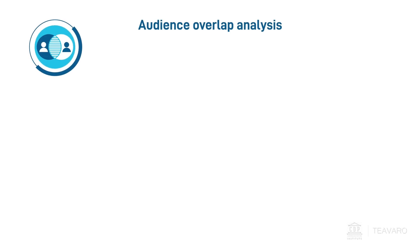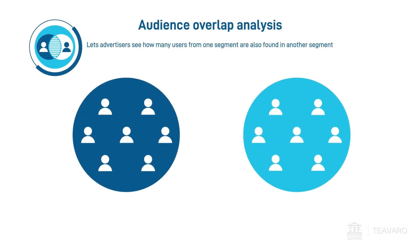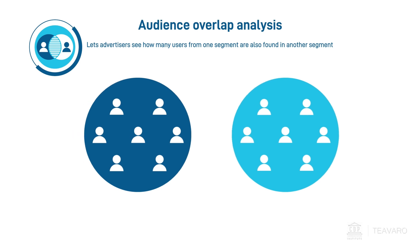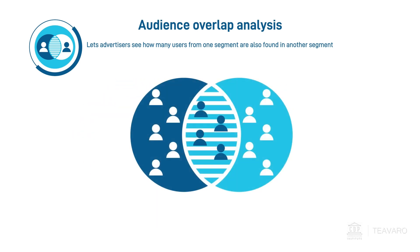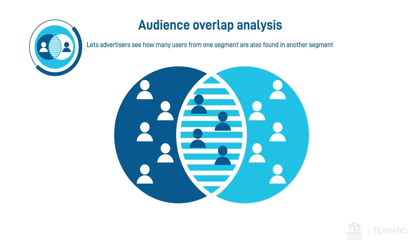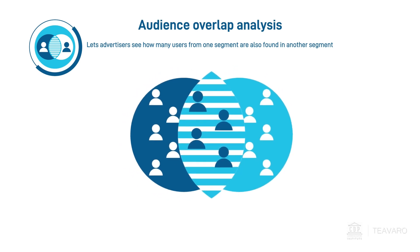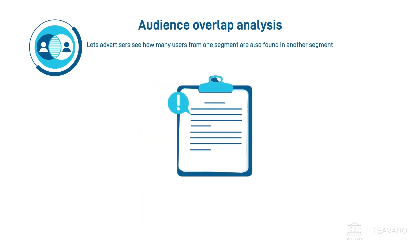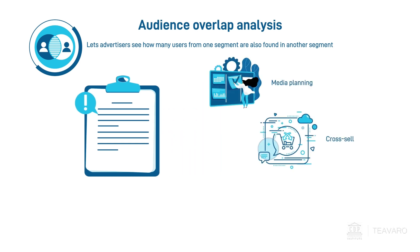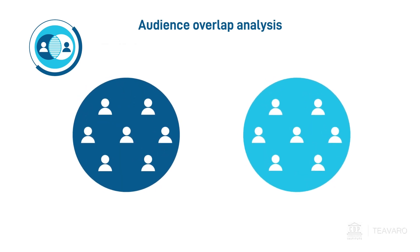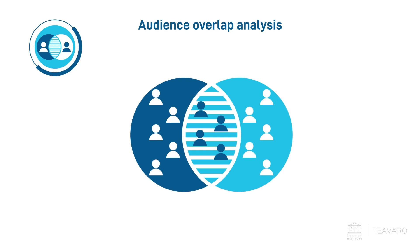Audience overlap analysis lets advertisers see how many users from one segment are also found in another segment, or how many users that can be reached through one media can also be reached through another media. It can provide valuable information for media planning, cross-selling, and co-marketing. Audience overlap analysis on a person level requires matching users from both audiences, and only if the identity graph is complete and accurate can the overlap be determined with confidence.